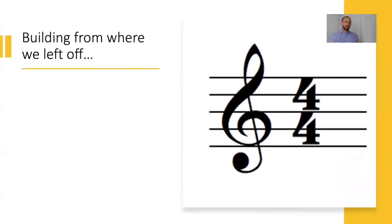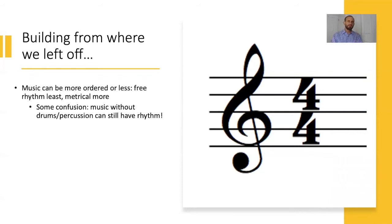What we're doing this week is building from where we left off. Last week we talked about how music can be more or less ordered: free rhythm, which is the apparent absence of rhythm, or metrical rhythm, which is more ordered. There was a little confusion though. Sometimes people seemed to be associating music without drums or percussion as free music, and that's not really the case. Music that's a cappella or choral music is actually very rhythmic generally. So just see if you can feel a pulse or not. If you have multiple people singing at the same time, you can almost bet that there's some kind of rhythm.